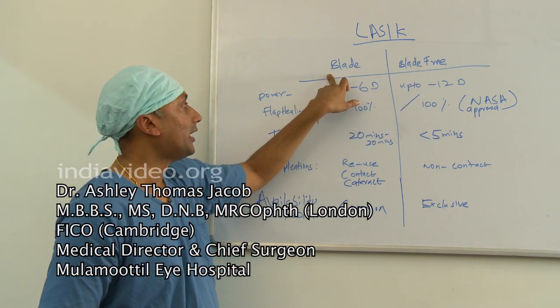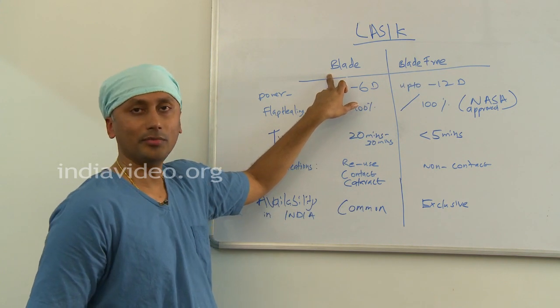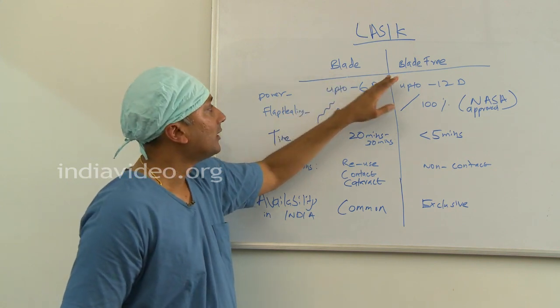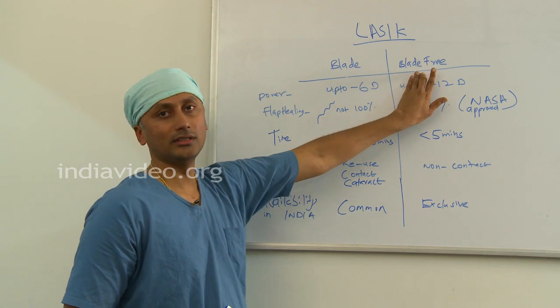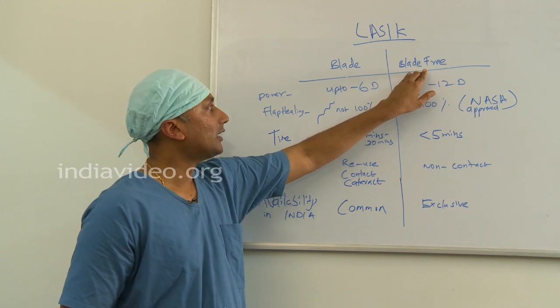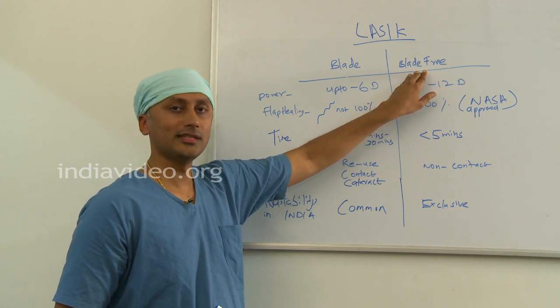With blade, the flap on the cornea is made with a metallic blade and the power is removed with excimer laser. In blade free or 100% laser assisted LASIK, the flap is created with a femtosecond laser and the power is removed with excimer laser.